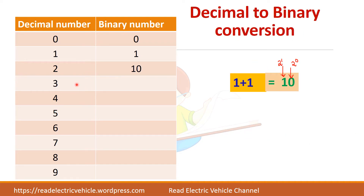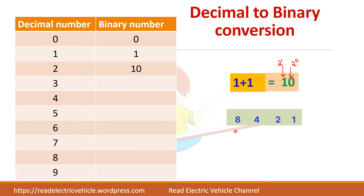Next, for decimal 3: take binary 10 and add 1 to get 11. Or using the 8, 4, 2, 1 sequence, for 3 you need 1 in the 2's position and 1 in the 1's position, with the rest 0. So 0, 0, 1, 1 — adding 2 plus 1 gives 3. So binary 11 is equivalent to decimal 3.